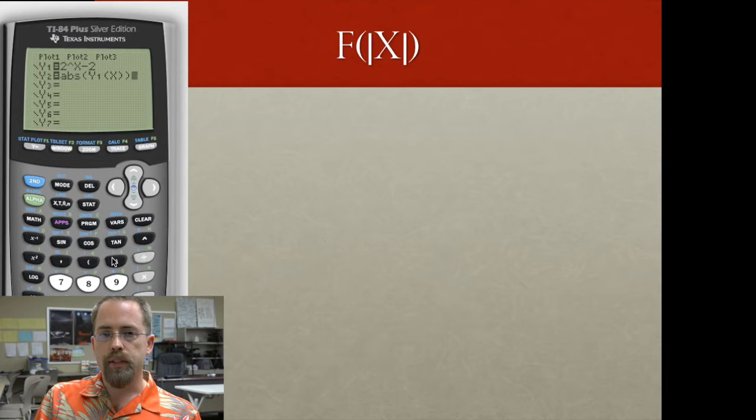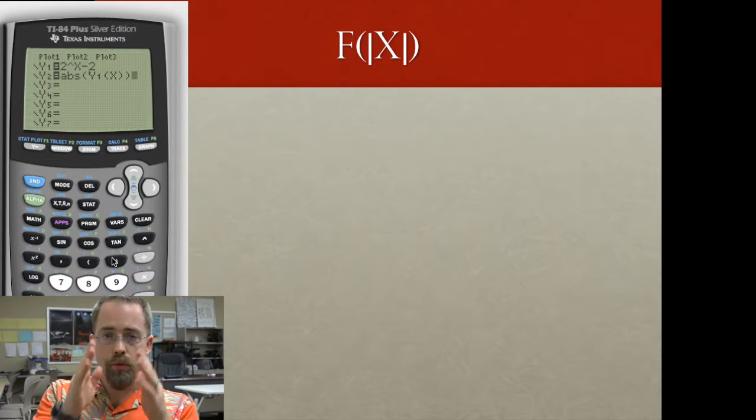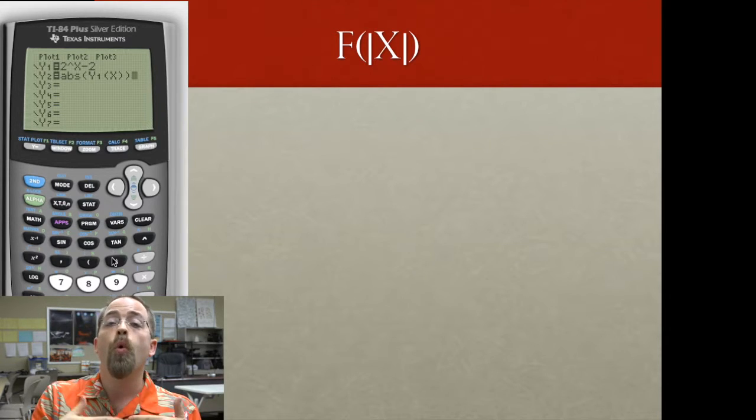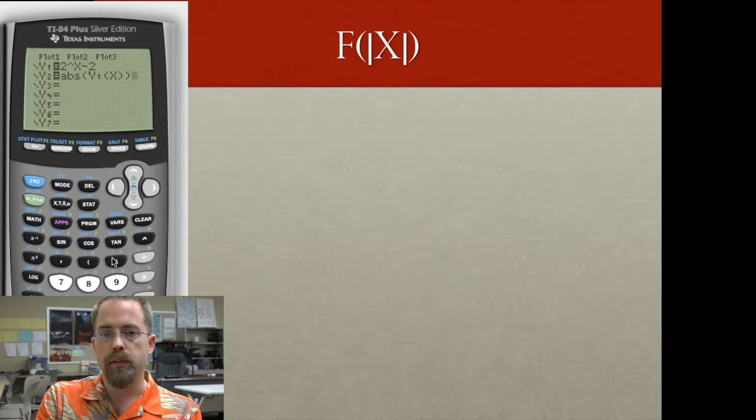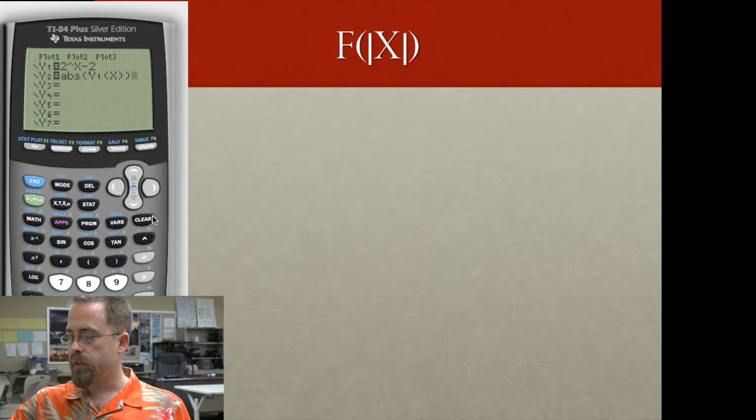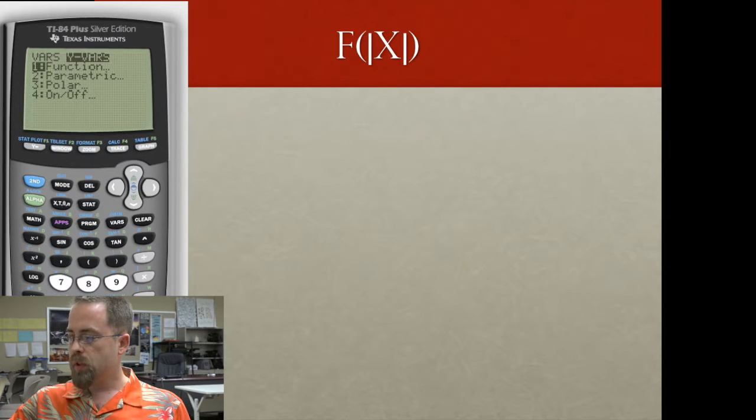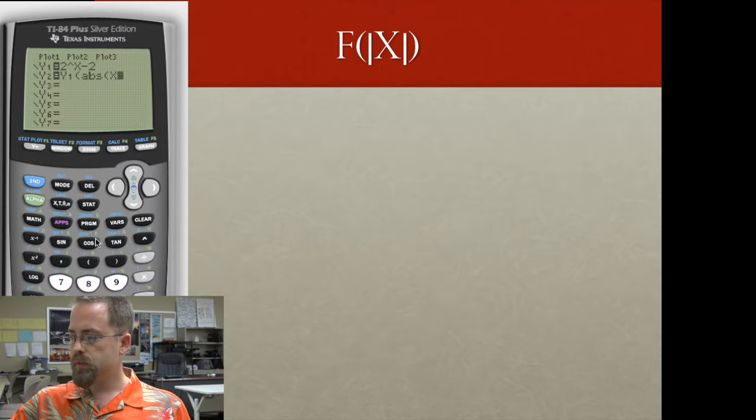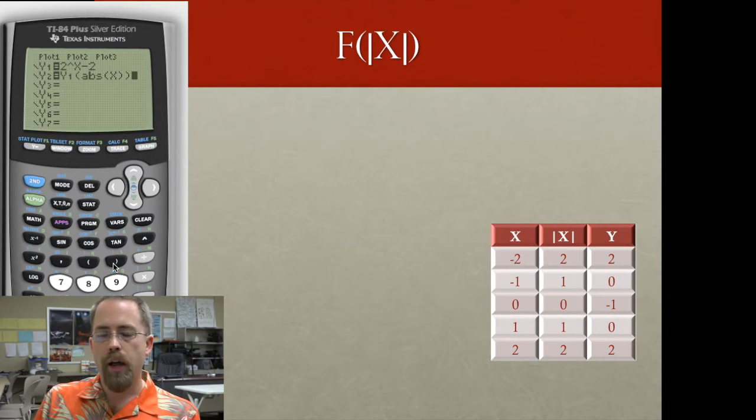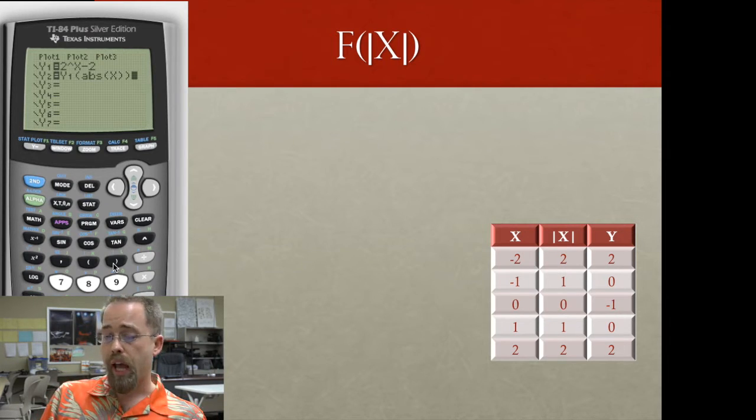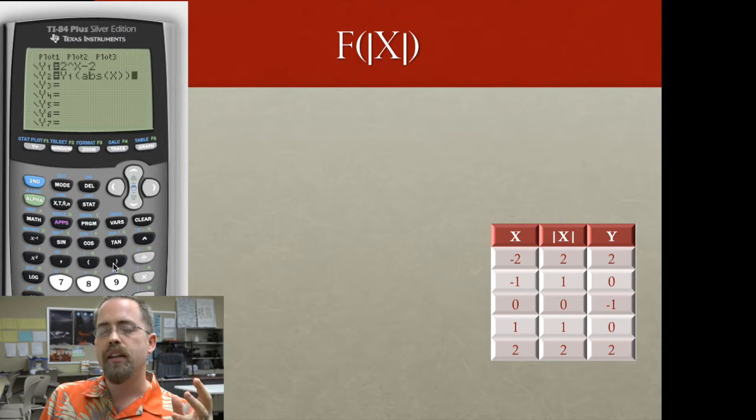Last one of these kind of things to consider is what if we put absolute value bars on x before it gets plugged into the function. So again, with the calculator, that's going to be VARS, YVARS, Y1 of math, num, abs, x. So that means we pick our x's. We can still pick every x, but then comes the censoring. Then comes turning negative x's into positive ones before they get plugged into the function.